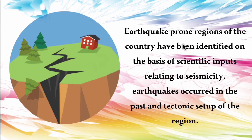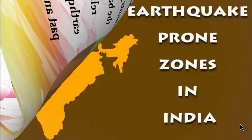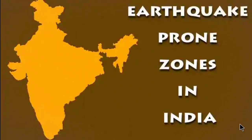Earthquake-prone regions are identified on the basis of scientific inputs relating to seismicity, past earthquakes and the tectonic setup of the region. Seismic zones are classified from Zone 5 to Zone 2. Zone 5 has the highest level of risk.